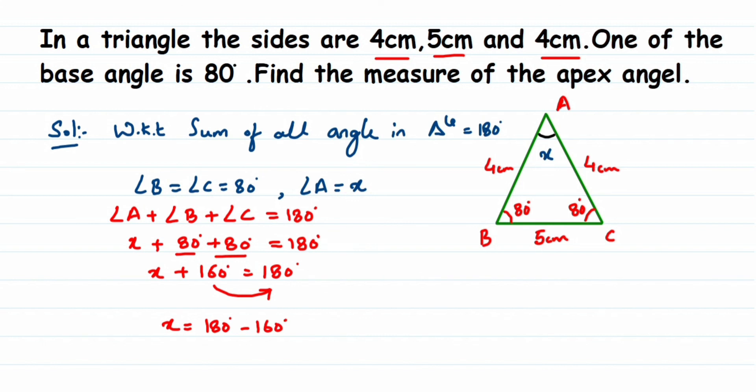So from here we can write down x is equal to 180 minus 160, which is 20. So the x value we got as 20 degrees. Therefore, the apex angle will be equal to 20 degrees. That is, angle A is 20 degrees.